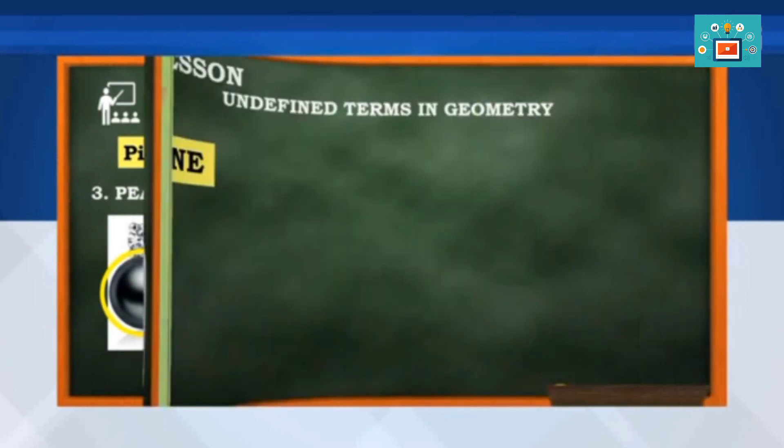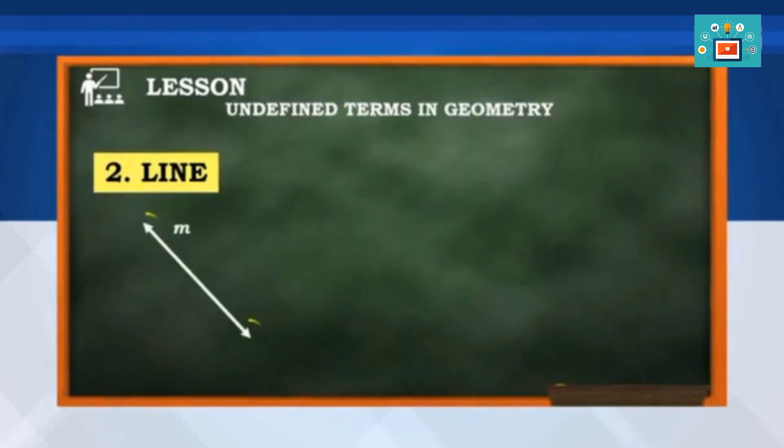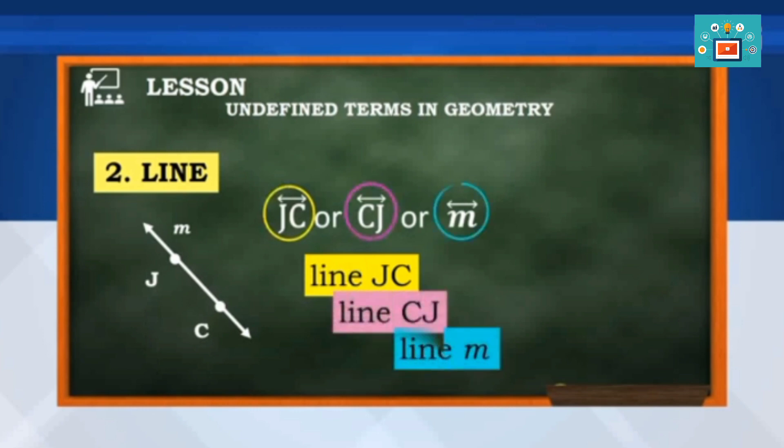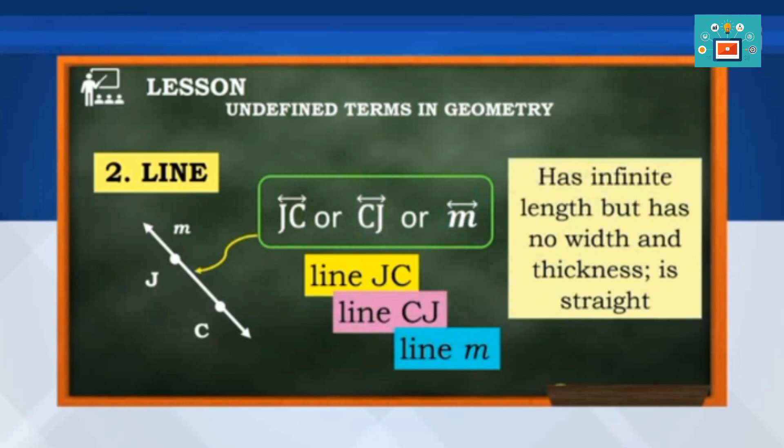The second undefined term is a line. It is a straight mark with two arrowheads. Given two points named J and C, we can name a line using two capital letters JC. Or we may interchange it CJ with a double arrowhead above them or a lowercase letter and can be read as line JC or line CJ or line M.